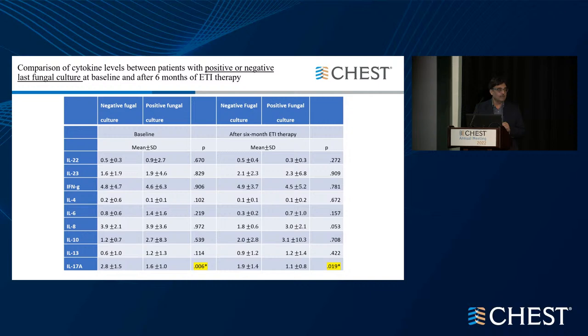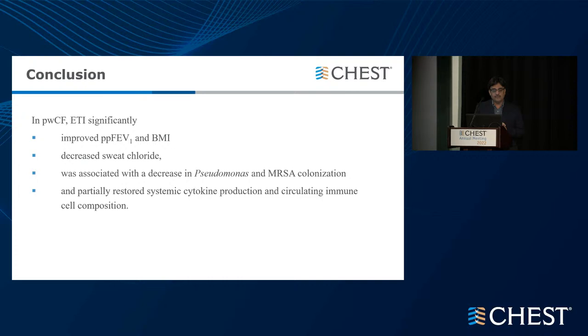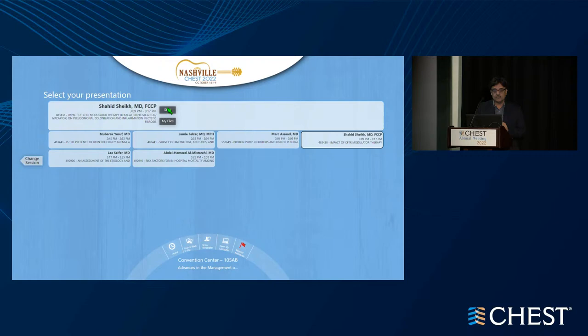In conclusion, in patients with CF on ETI or Trikafta therapy, there is significant improvement in FEV1 and BMI, significant decrease in sweat chloride, and therapy was associated with decreases in Pseudomonas and MRSA colonization, and partially restored systemic cytokine production and circulating immune cell populations. Thank you very much for your patience.